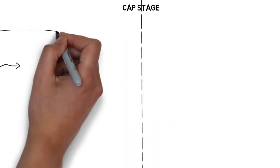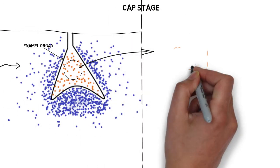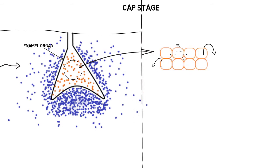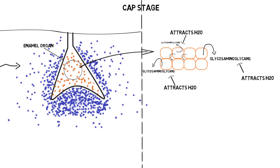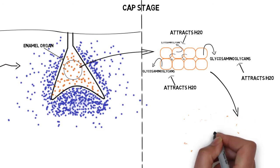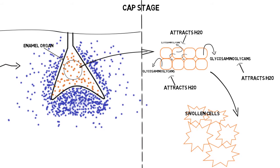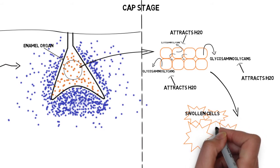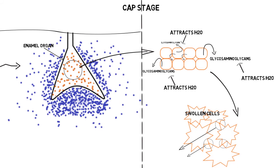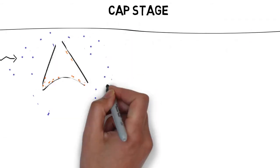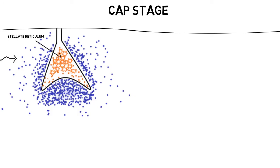The cells in the center of the enamel organ start to secrete glycosaminoglycans into the extracellular compartments between the cells. Glycosaminoglycans, being hydrophilic in nature, start to attract water from outside the enamel organ into its center. As water enters, the cells begin to swell and appear expanded, but they remain joined to neighboring cells by cell junctions or desmosomes. Therefore they appear star-like in nature, and this swollen center of the enamel organ is called the stellate reticulum.